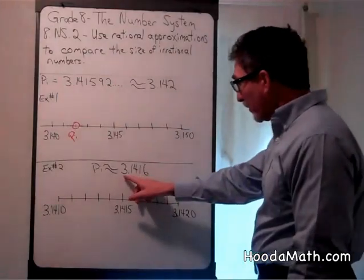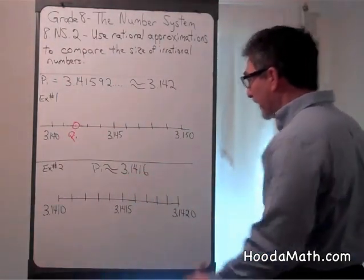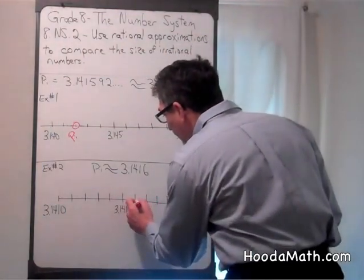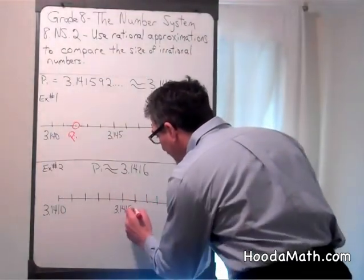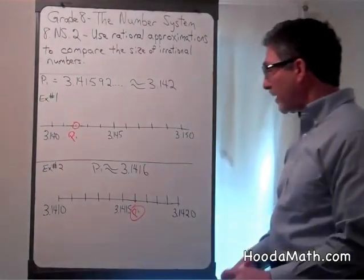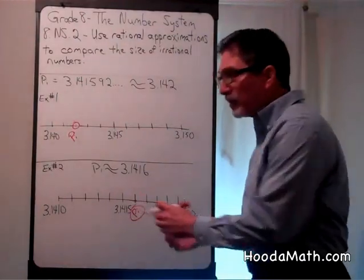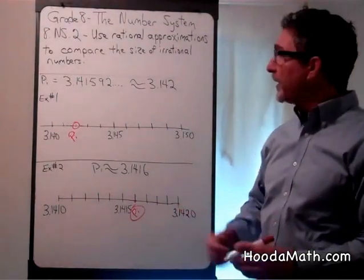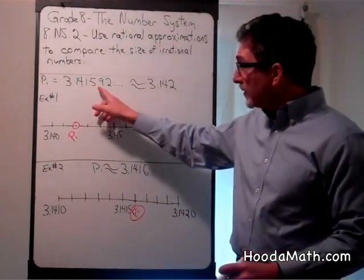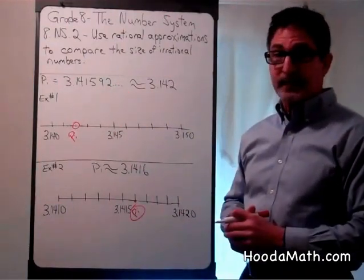So 3 and 1,416 ten-thousandths would be here, which is approximately pi. Pi is located about there on the number line. You can get closer and closer approximations of pi by going farther and farther to the right in your number.